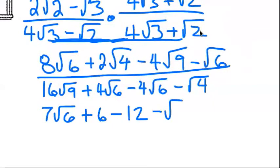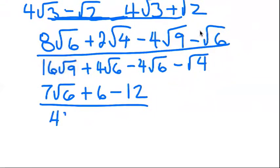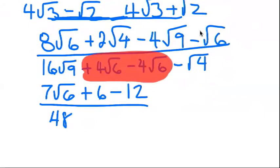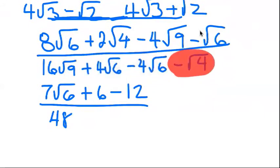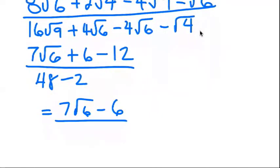16 square root 9 is 16 times 3, which is 48. Plus 4 root 6 minus 4 root 6 — these will cancel. Minus square root 4 is minus 2. So we have 7 root 6 plus 6 minus 12, which is 7 root 6 minus 6, all over 48 minus 2, which is 46. If all the coefficients don't simplify together, then we do not cancel or simplify anything.